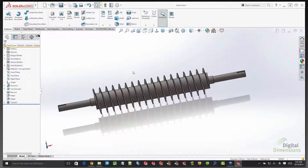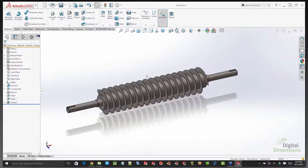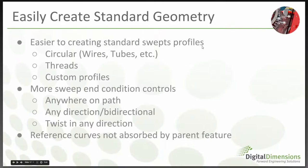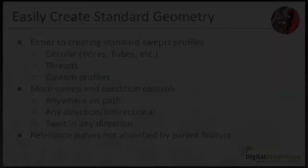That's a great new feature. Out of the box it supports all standard threads but it can also be customized to speed up your process. In summary for this geometry section: sweep improvements include circular profile, end conditions in any direction, twist and control options, and curves are no longer absorbed by the parent feature.